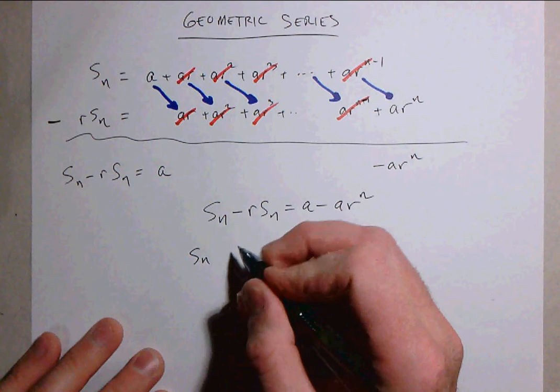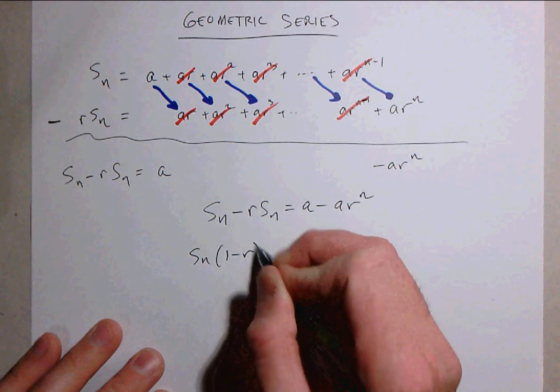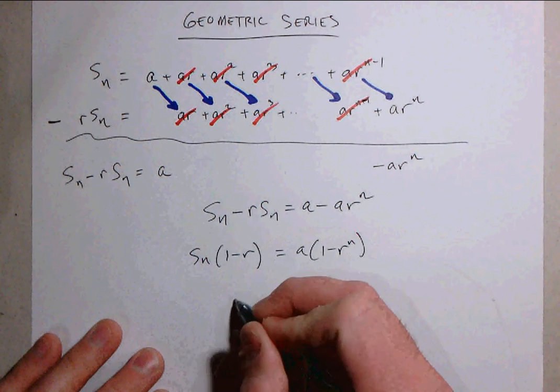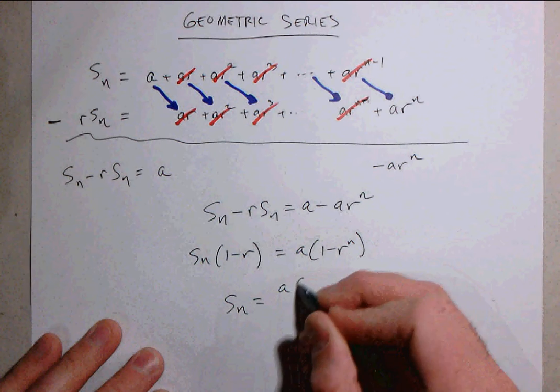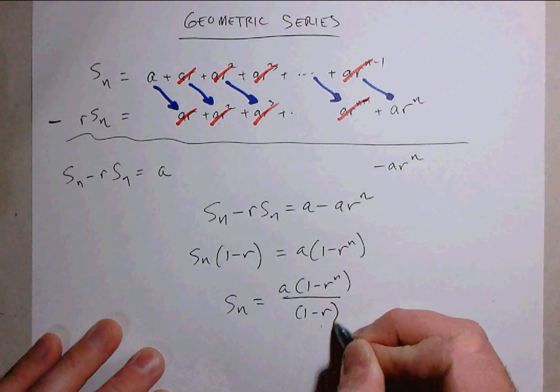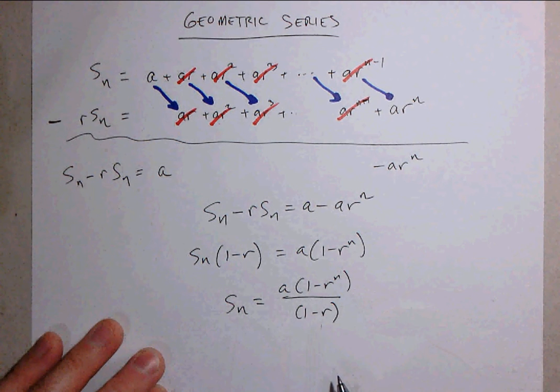Do a little bit of factoring. We'll take out the s sub n here and get 1 minus r. We'll take out an a here and get 1 minus r to the n. And then we divide. And here is the closed formula for s sub n. a times 1 minus r to the n over 1 minus r.